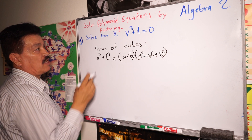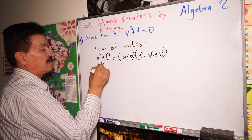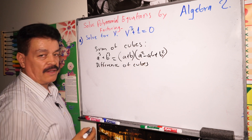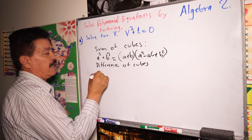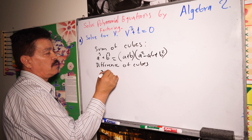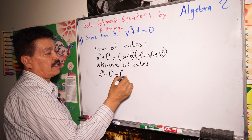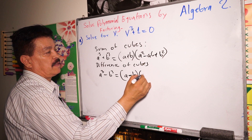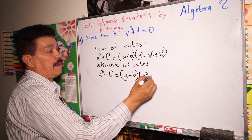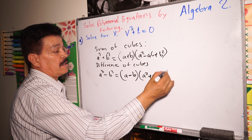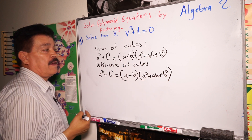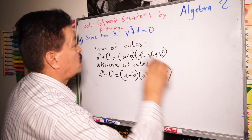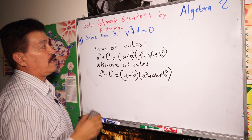Another rule that we need to remember is the difference of cubes. A to the third power minus B to the third power equals A minus B, times A squared plus AB plus B squared. See the difference right here. These are the two rules we need to remember to work with this kind of polynomial equation by factoring.